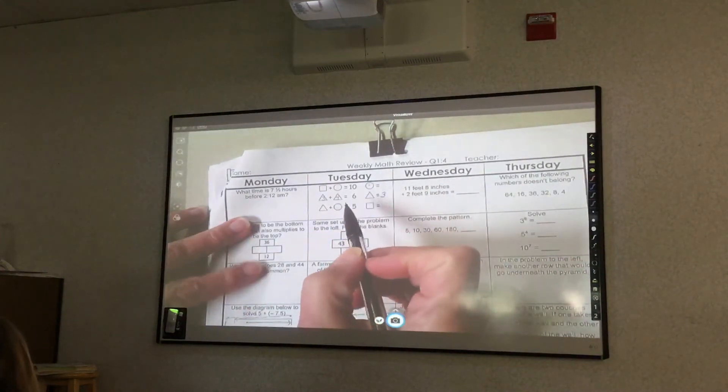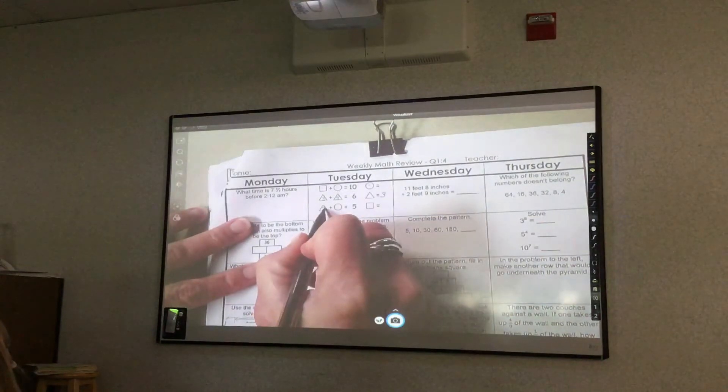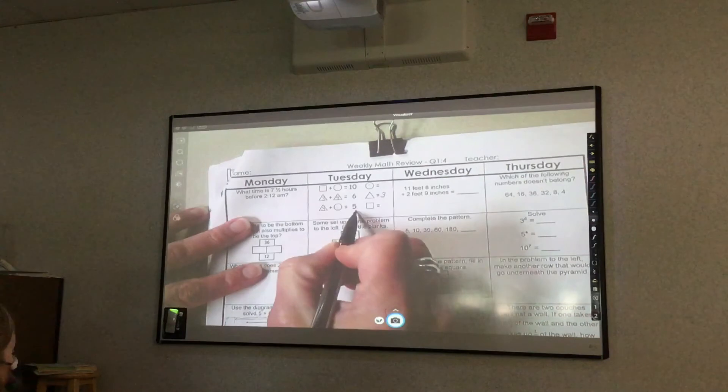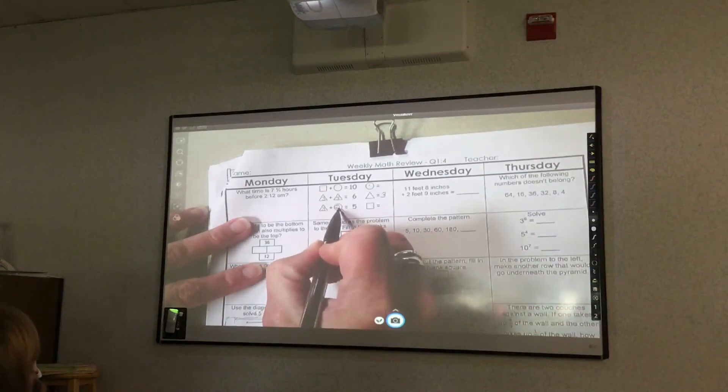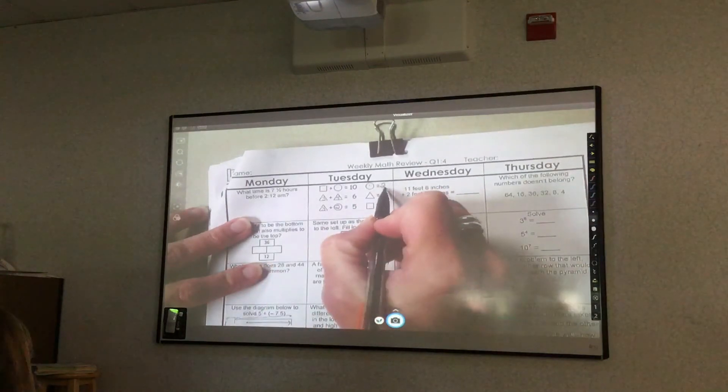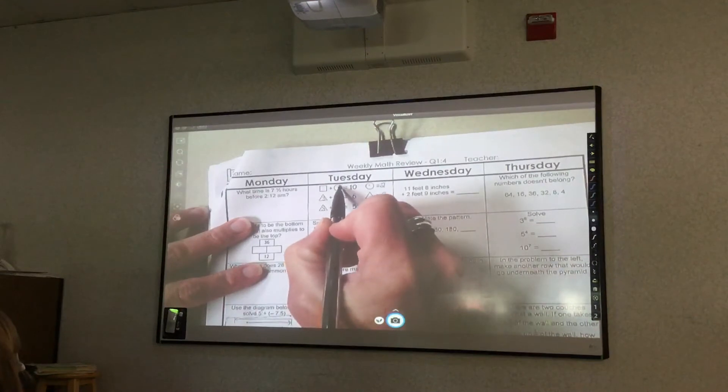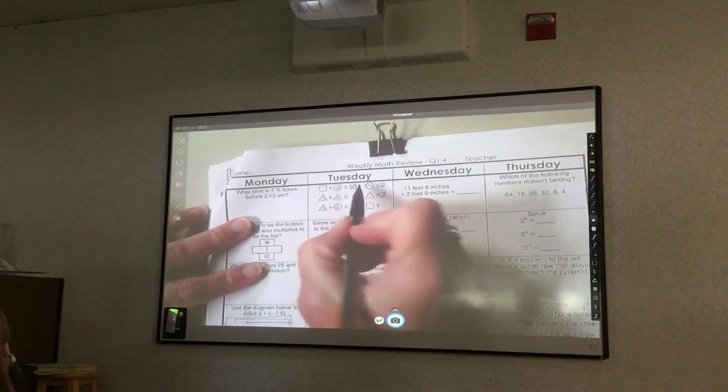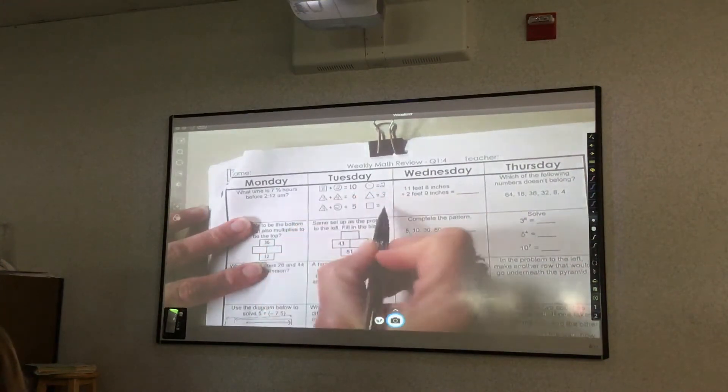Then I go find another triangle and I put the three in for that triangle. So three plus what gives me five? Two. So my circle has to equal two. So then I put my two up here in this other circle. So then what plus two equals ten? Eight. So then my square has to equal eight.